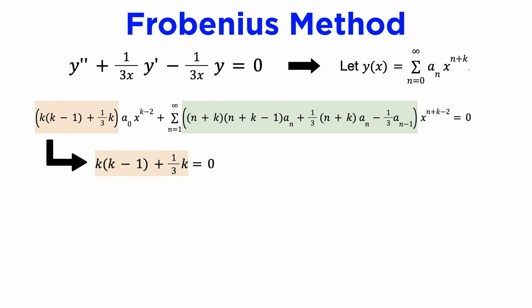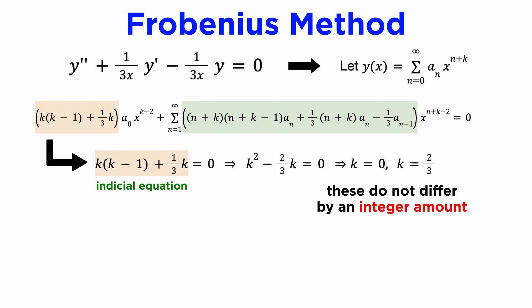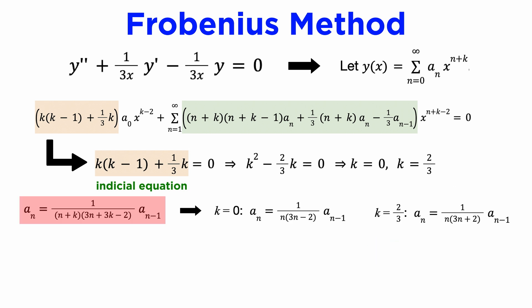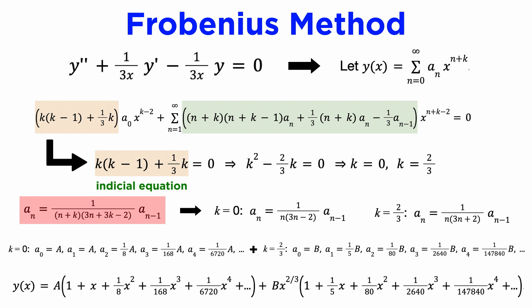To find k, we set the expression outside our summation to 0, and this will yield something called the indicial equation. In our case, the indicial equation is a quadratic equation in k, and we can solve it to find that it has roots k = 0 and k = 2/3. In the Frobenius method, if the roots of the indicial equation are distinct and do not differ by an integer amount — which is the case here — then we just put each of the two values of k into our recurrence relation to get two different recurrence relations, which gives us the coefficients for two linearly independent basis solutions for y, where we have chosen an initial constant a₀ which can be different in each case. Adding these two basis solutions together gives the general solution.